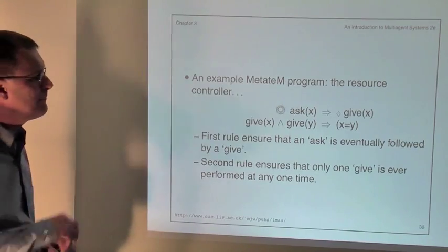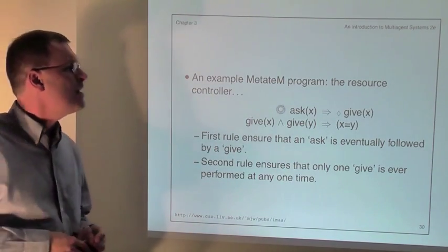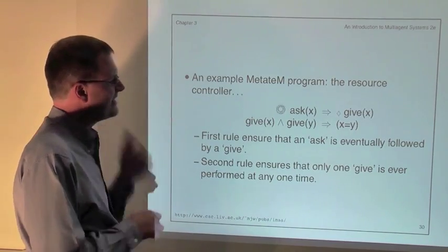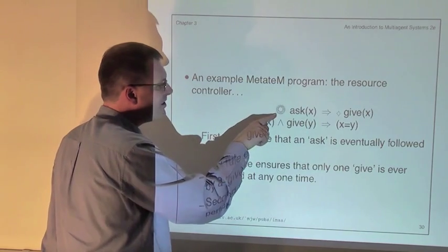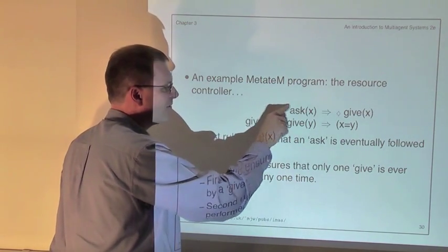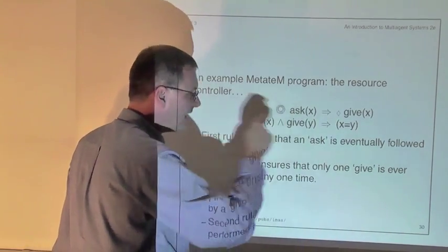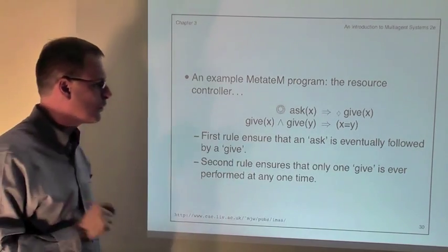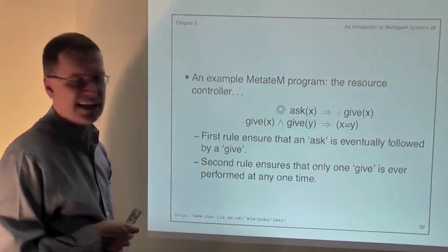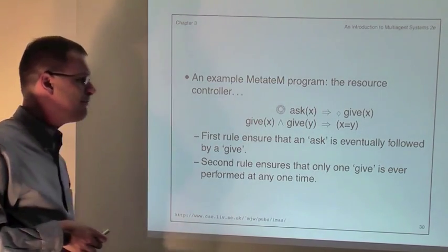Here is a simple example of a MetateM program — a resource controller. The idea is there's a resource like a printer which is infinitely renewable but non-shareable, so you should only ever allocate it to one individual at any given time. The program has two rules: the first says if in the last decision cycle individual x asked for the resource, then eventually I will give it. The second says if I give to x and I give to y, then x and y must be the same individual — so you never give to more than one at the same time.